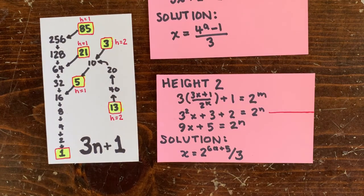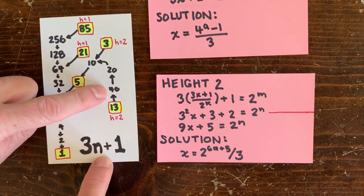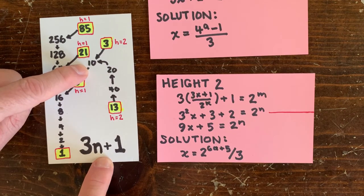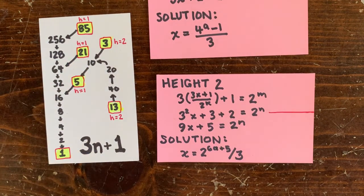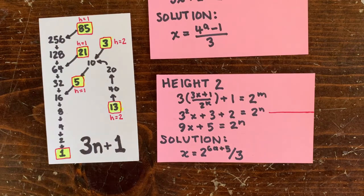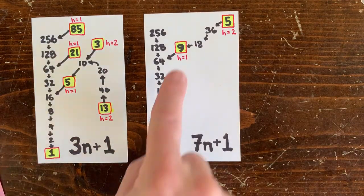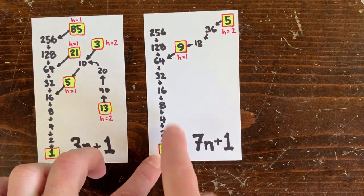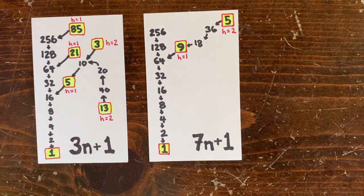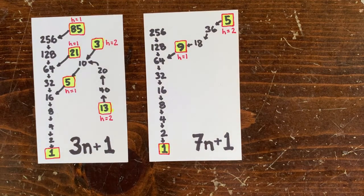For now, I'm going to gloss over the other height 2 numbers, like 13, which might go through several even numbers to reach 5. We'll worry about that later. So the same thing for 7n plus 1. 9 is a height 1 number because it connects directly to the power of 2 spine. 9 times 7 plus 1 is 64. And 5 is a height 2 number.